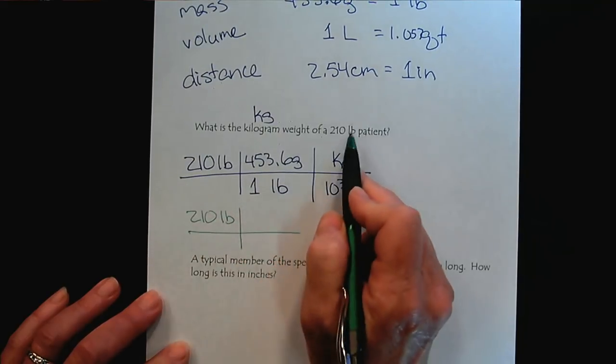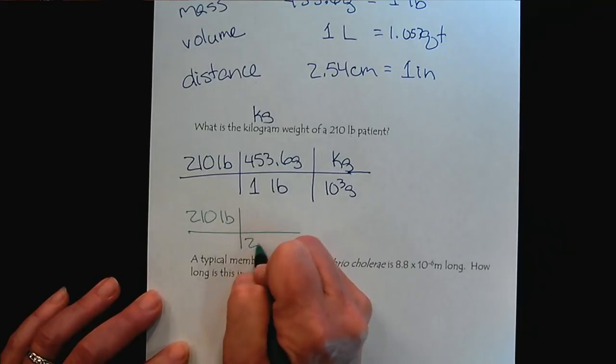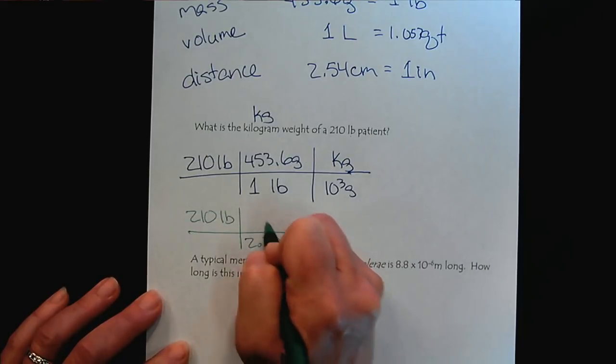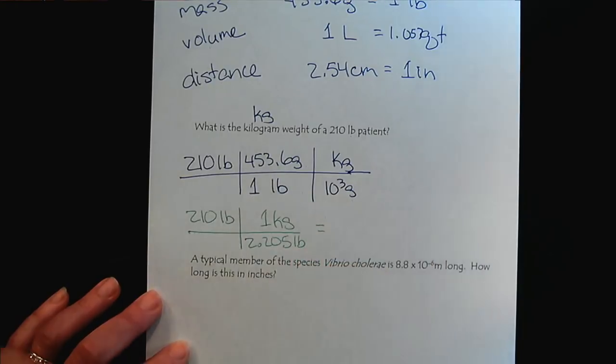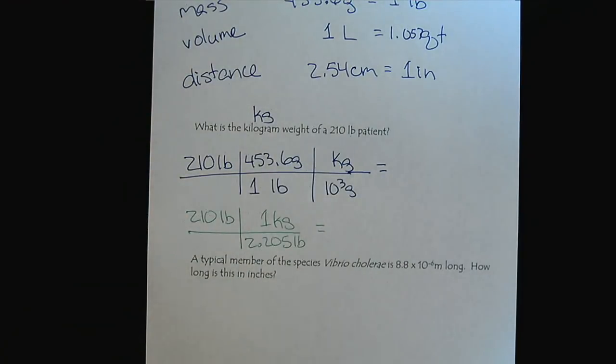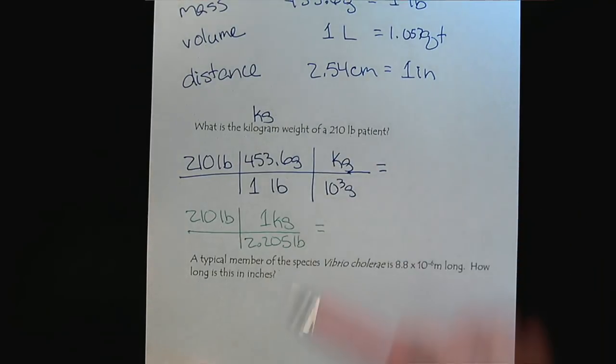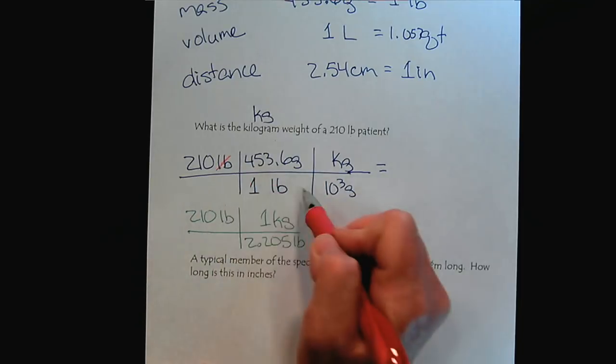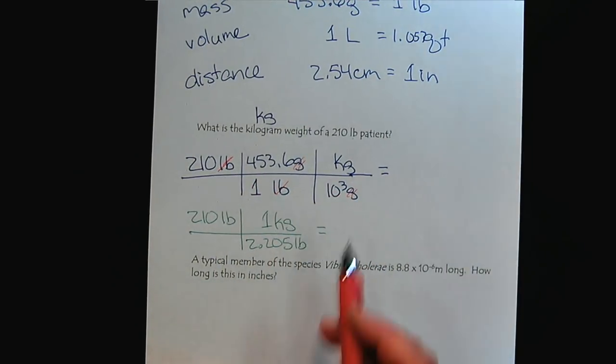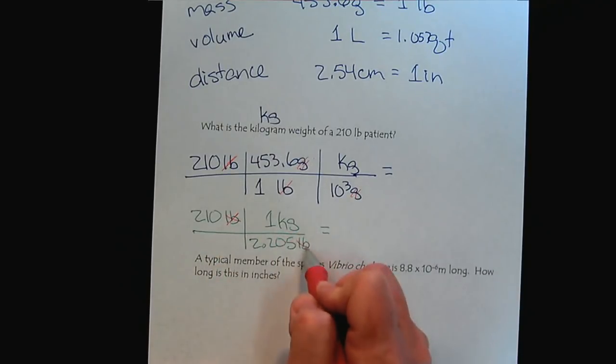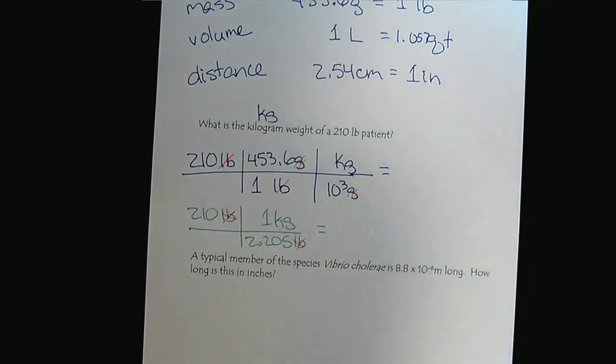We could go directly from pounds to kilograms because there are 2.205 pounds in every kilogram. So I've shown the calculation two ways. And in my dream world, that will be empowering to you because notice that it doesn't matter which way we solve the problem. If we go from pounds to grams and grams to kilograms, or if we quickly just go straight from pounds to kilograms, regardless of the way we set it up, the final units are in kilograms, and so the final answer is going to be the same either way.